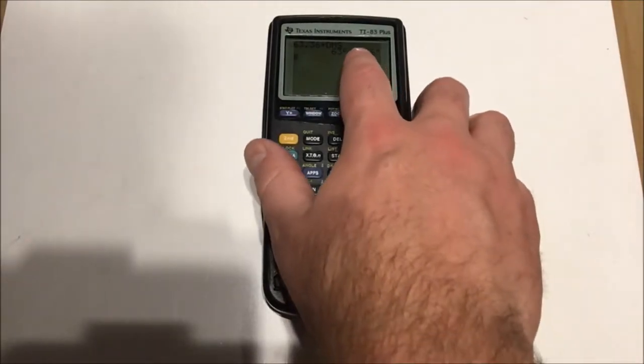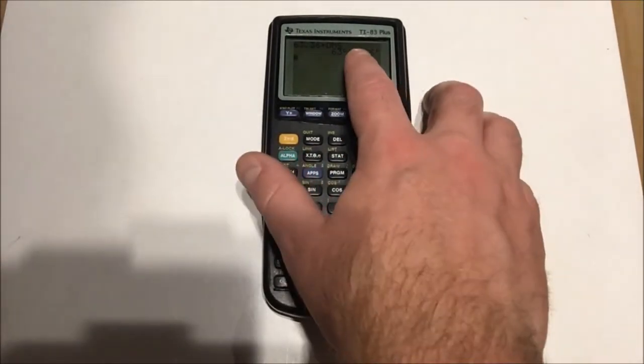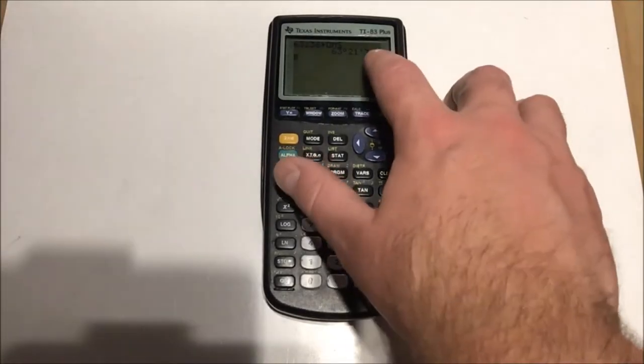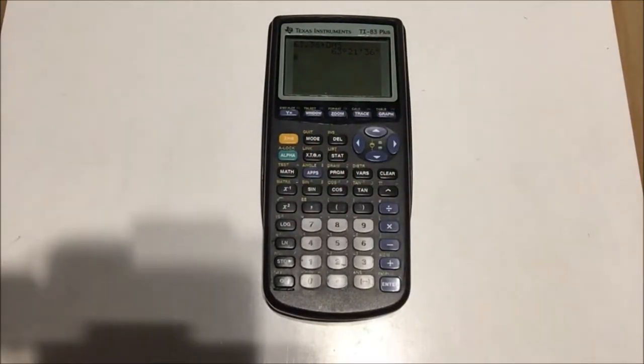Now let me take a moment to explain for those of you who might be lost here what minutes and seconds are in angle language. A minute is a 60th of a degree, and a second is a 60th of a minute. So this is like base 60 in a way.